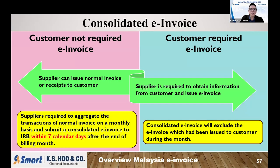What is consolidated? You consolidate all the normal invoices and submit to the income tax. So let's say you have a B2C business. Some customers require e-invoice, some do not. If a customer requires e-invoice, of course you give them the e-invoice. If not, you issue a normal invoice. After the end of the month, you find out how much normal invoices have been issued, consolidate them into a consolidated e-invoice, and submit to IRB within seven days after the end of the month.